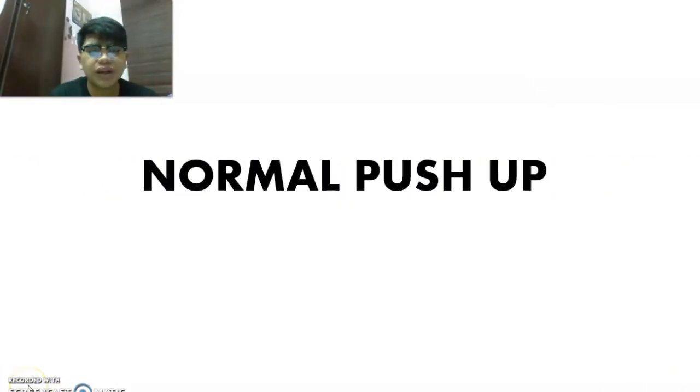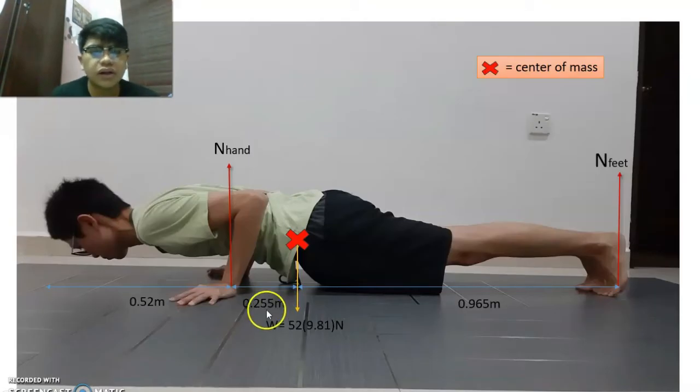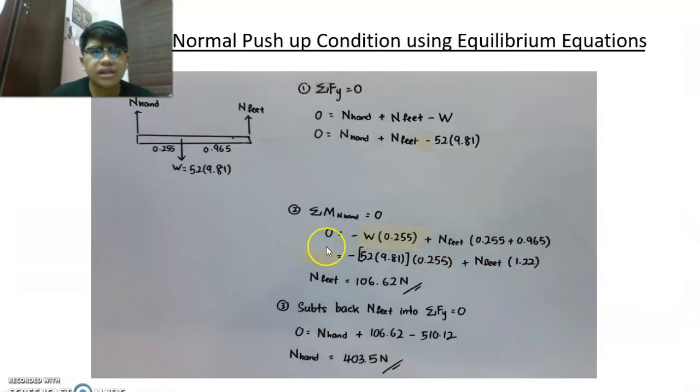Hi, my name is Noh. Today we're going to talk about normal push-up. This slide shows the Hongkate push-up with normal force of hand and feet. At the center of mass there's weight, which is 52 multiplied by gravity 9.81 Newton. This is our calculation for normal push-up using equilibrium equations. The distance here is 0.255 meter and distance here is 0.965. The first step is ΣFy = 0. So Nhand + Nfeet - W = 0, and Nhand + Nfeet = 52 multiplied by gravity.